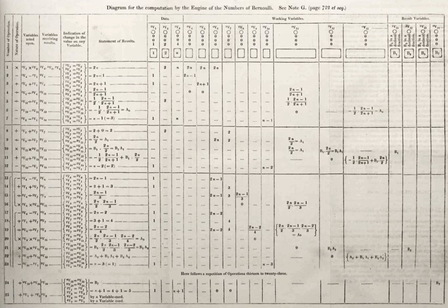Algorithm versus function computable by an algorithm: for a given function multiple algorithms may exist. This is true even without expanding the available instruction set available to the programmer. Rogers observes: 'It is important to distinguish between the notion of algorithm, i.e. procedure, and the notion of function computable by algorithm, i.e. mapping yielded by procedure. The same function may have several different algorithms.' Unfortunately, there may be a trade-off between goodness and elegance — an elegant program may take more steps to complete a computation than one less elegant.